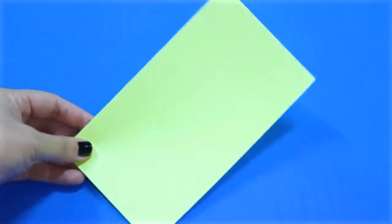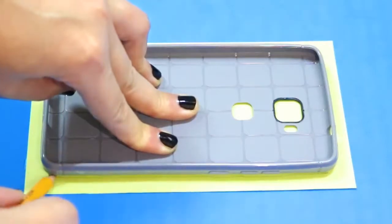You need a plain phone case and a template for this project. So grab a piece of paper, flip your case over, then trace the shape on the paper.